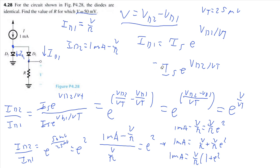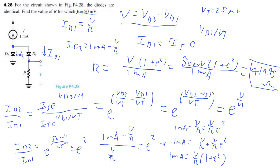If we multiply R on both sides and divide 1 milliamp by both sides, we get R equals V times 1 plus E to the power of 2 divided by 1 milliamp. So we get R equals 419.45 ohms. And that's our final answer.